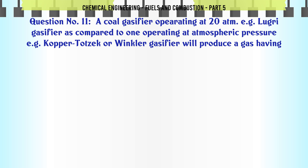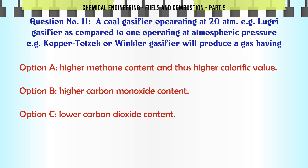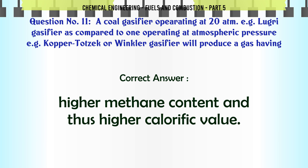A coal gasifier operating at high pressure (e.g. Lurgi gasifier) as compared to one operating at atmospheric pressure (e.g. Koppers-Totzek or Winkler gasifier) will produce a gas having: A. Higher methane content and thus higher calorific value. B. Higher carbon monoxide content. C. Lower carbon dioxide content. D. None of these. The correct answer is higher methane content and thus higher calorific value.